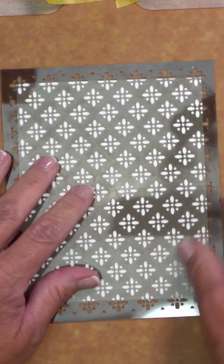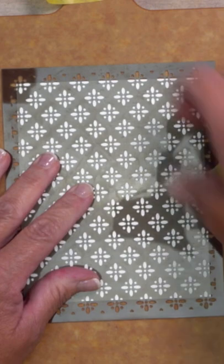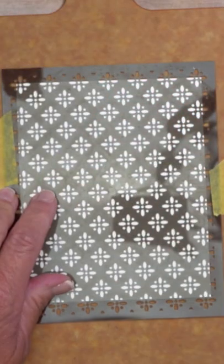I'll take my stencil and put that over the top, and I'll use a couple pieces of low tack tape to anchor that to the board so it doesn't slide.